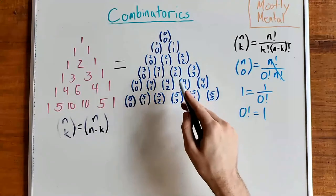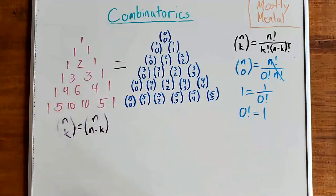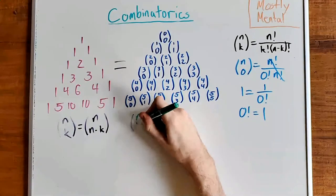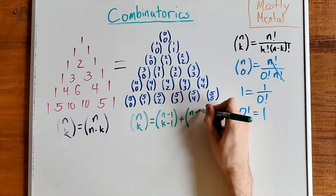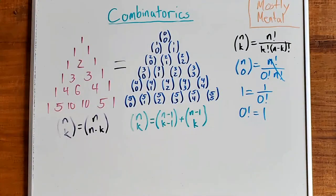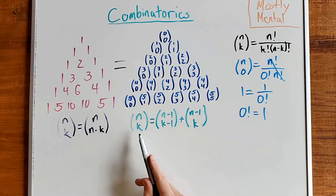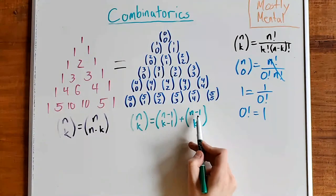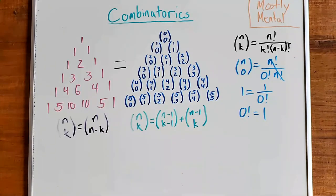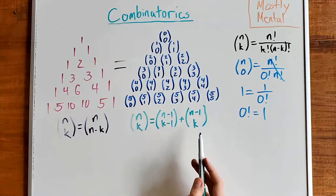Since Pascal's triangle is made up of n choose k values and we can add two numbers above to get the one below, that means n choose k equals n minus one choose k minus one plus n minus one choose k. This is easy to verify algebraically, but it can also be interpreted combinatorially: how many ways are there to choose k numbers from 1 to n? Either n is one of our chosen numbers (leaving k minus one to choose from n minus one) or it isn't (leaving k to choose from n minus one), giving this recurrence formula.